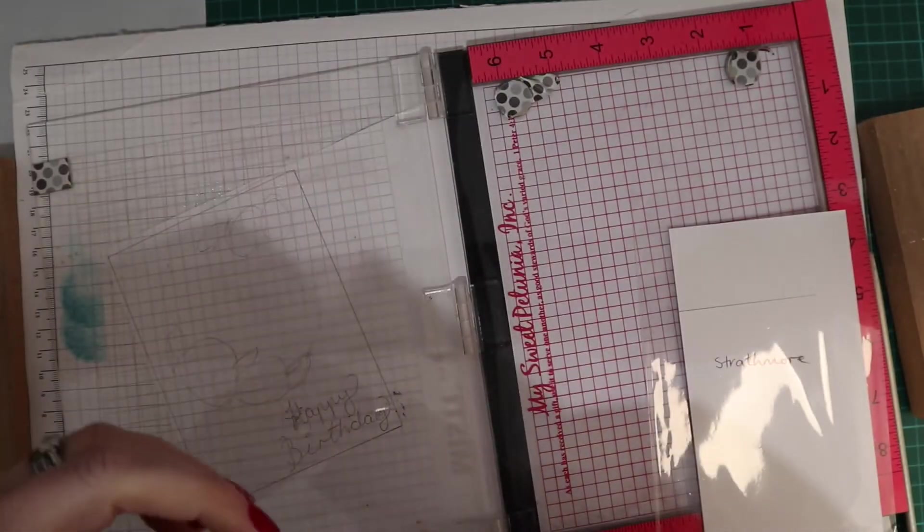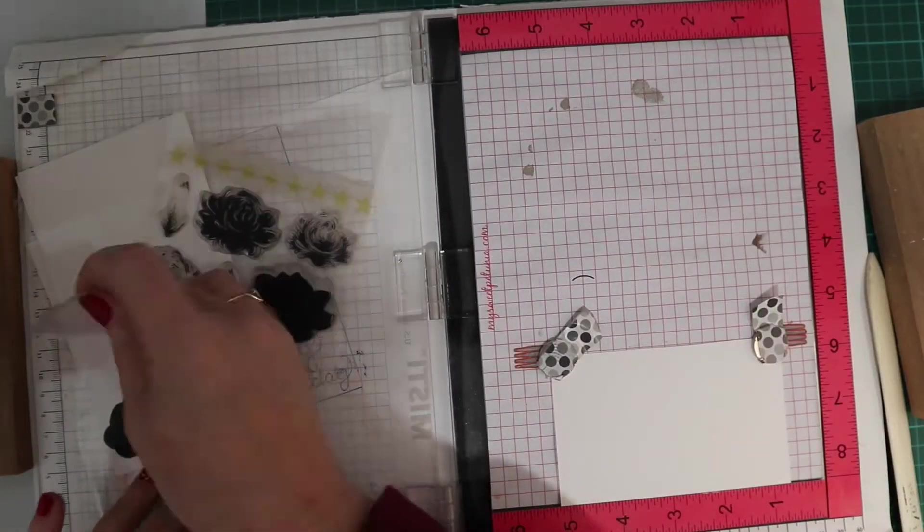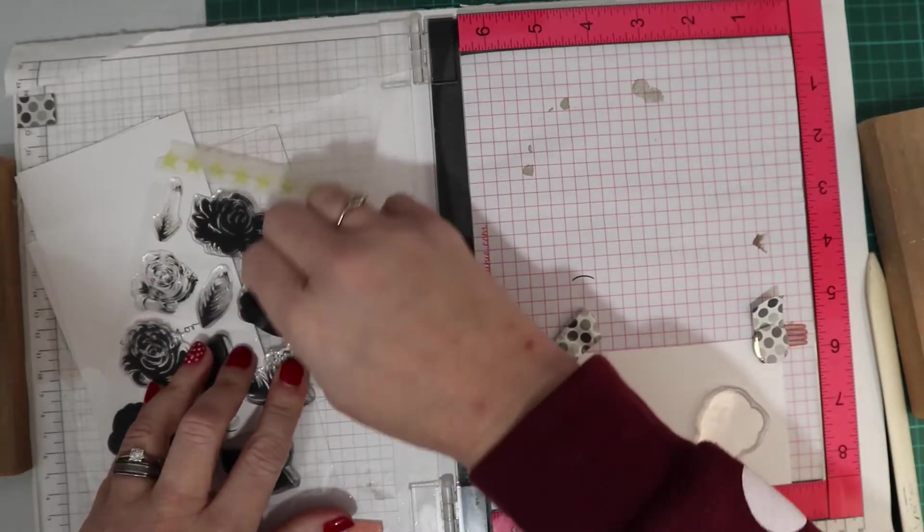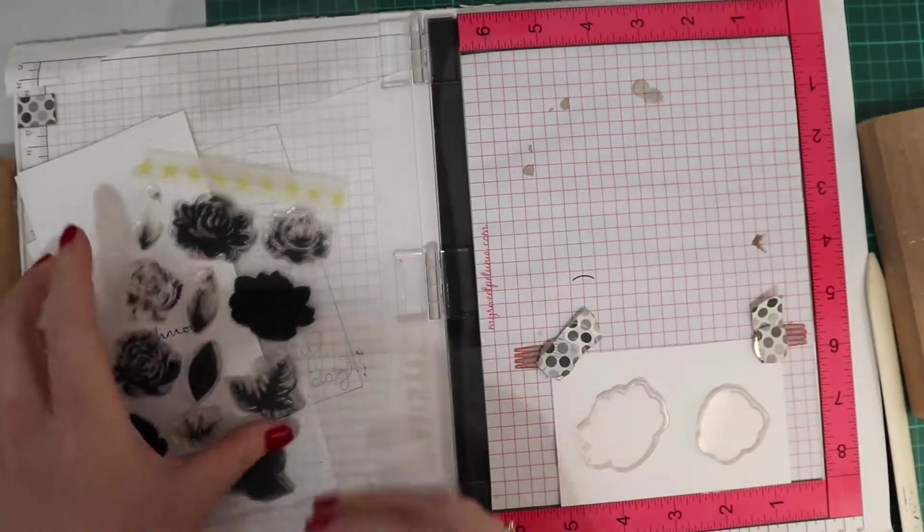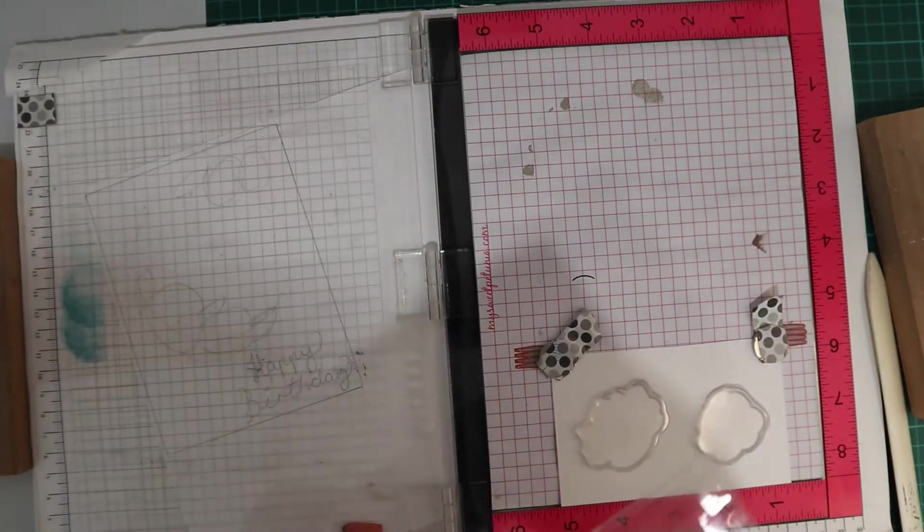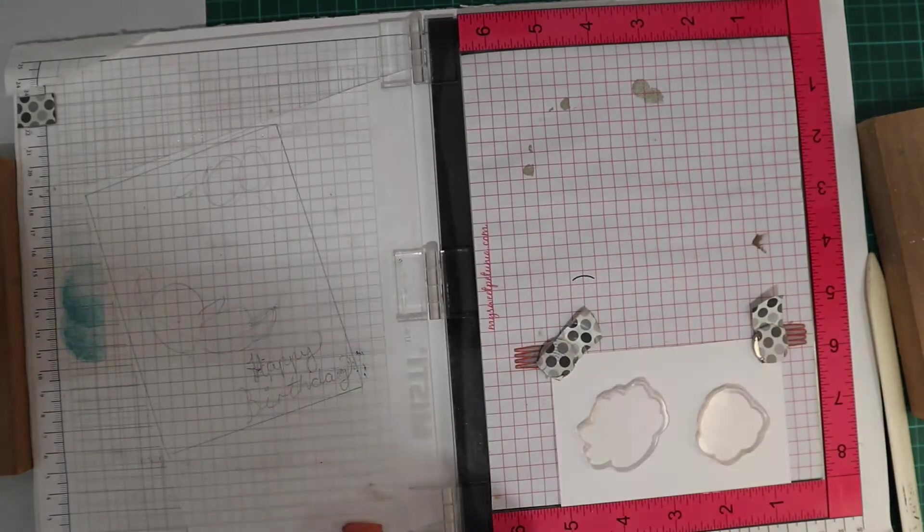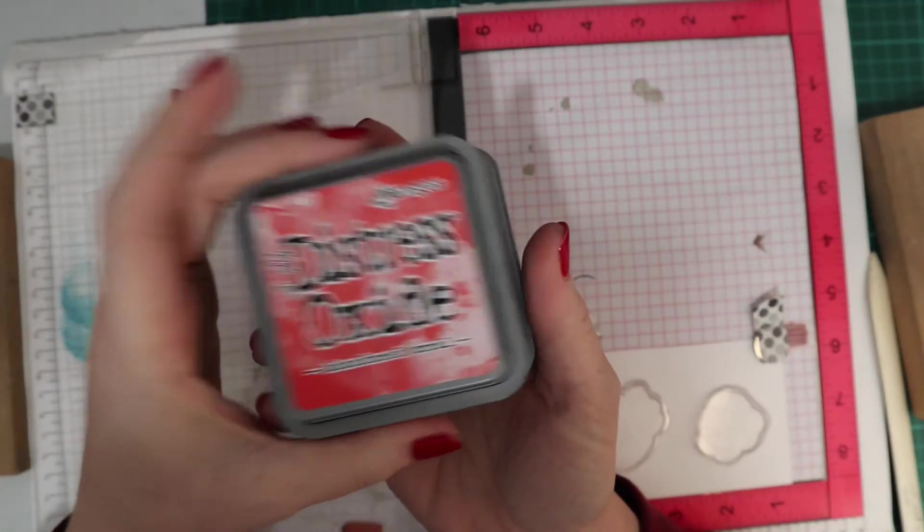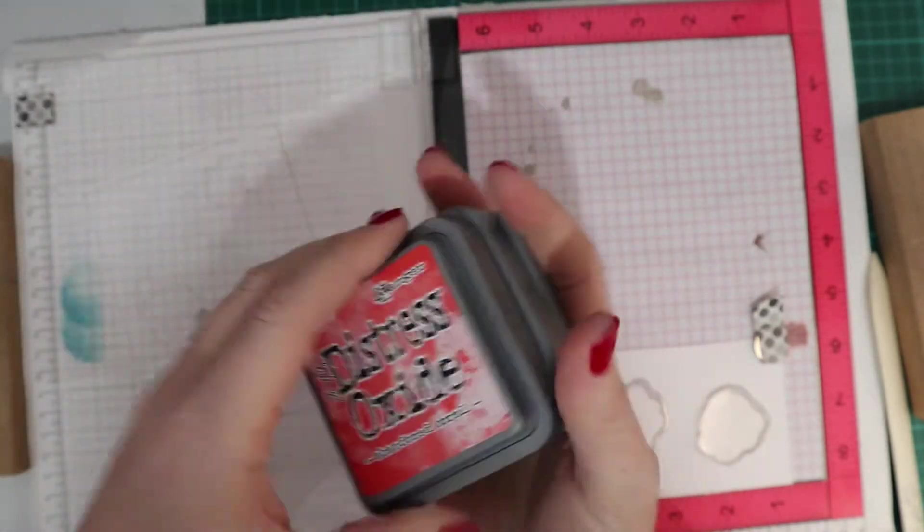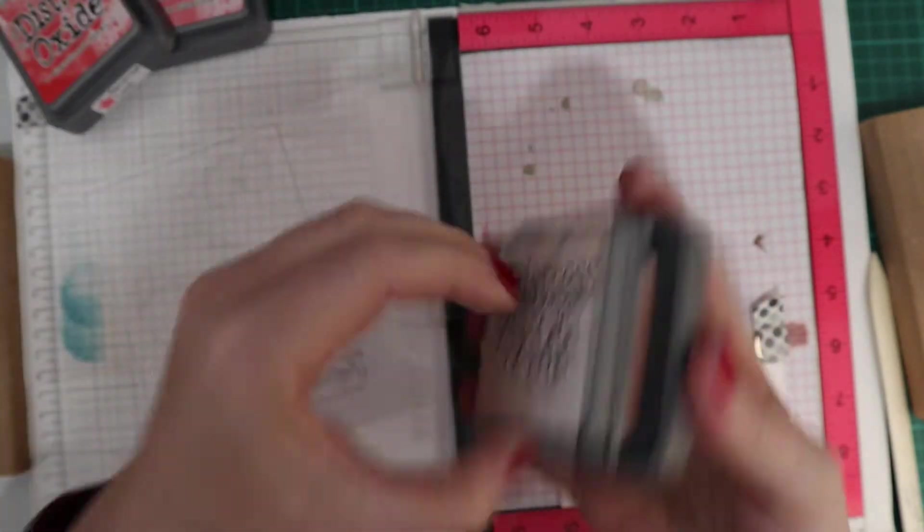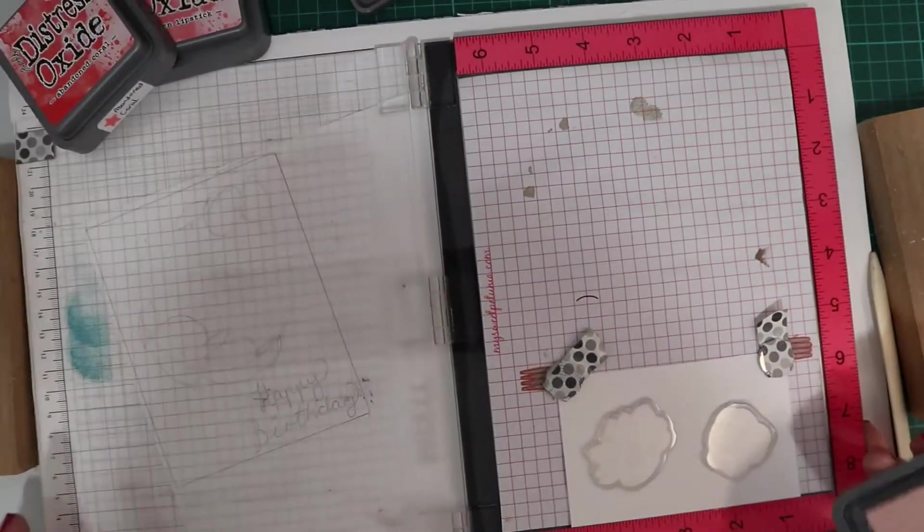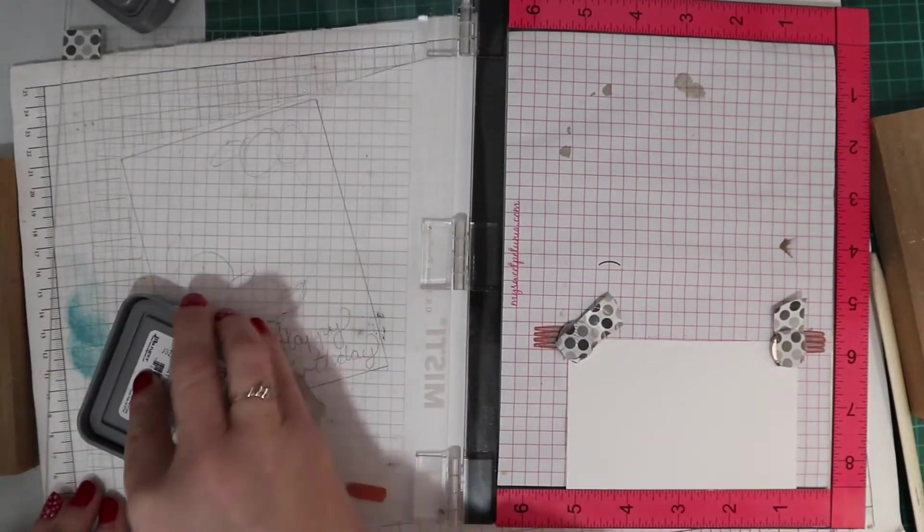This is a stamp set from Clearly Besotted called English Rose. I bought this while I was on maternity leave. I was laid up for the last few months of my maternity leave so I haven't actually crafted for many months, but I could still buy craft supplies and I bought quite a few and now I'm just working my way through them.